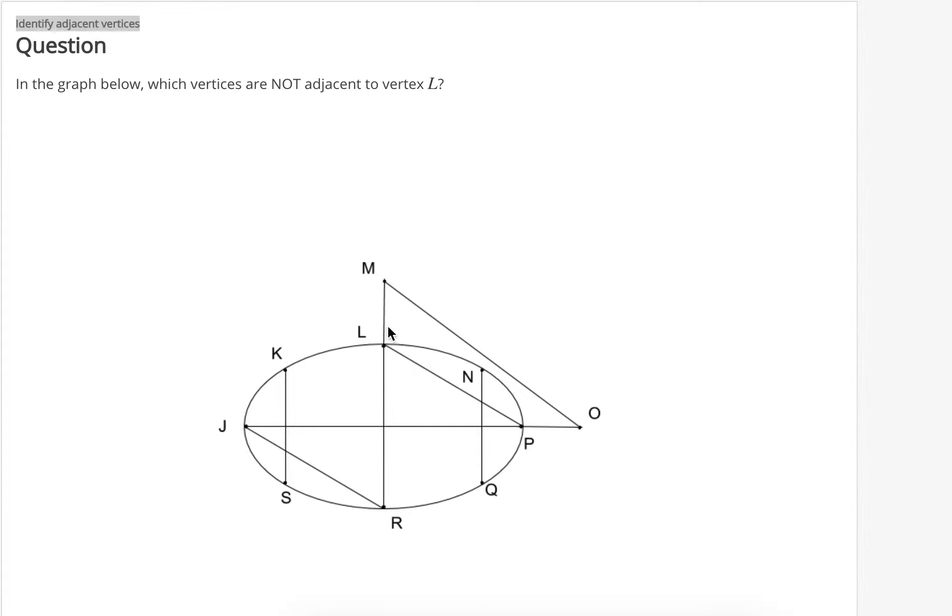M is adjacent because we can use this edge to connect L and M. K is adjacent because you can go straight from L to K. N is adjacent because you can go straight from L to N. P is adjacent because you can go straight from L to P.